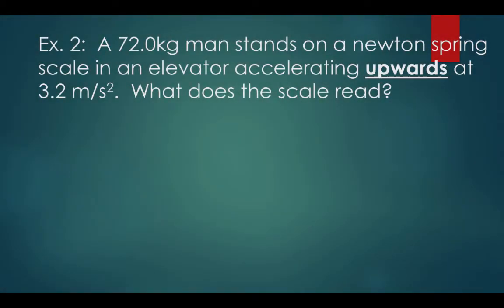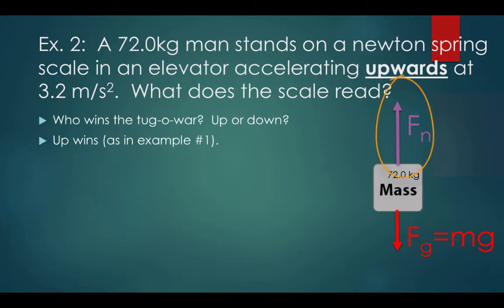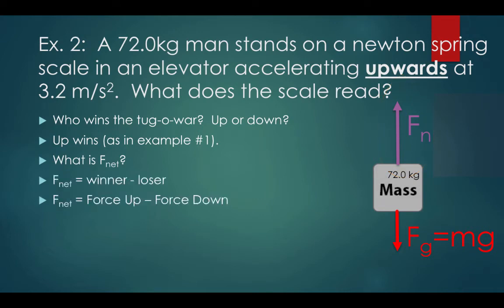Example number two: a 72-kilogram man stands on a Newton's spring scale in an elevator accelerating upwards at 3.2 meters per second squared. What does the scale read? Here's a free body diagram. Up wins the tug-of-war, as in example one. Fnet is winner minus loser — force up minus force down — which gives us Fnet equals normal force minus force of gravity, or Fnet equals Fn minus Fg.